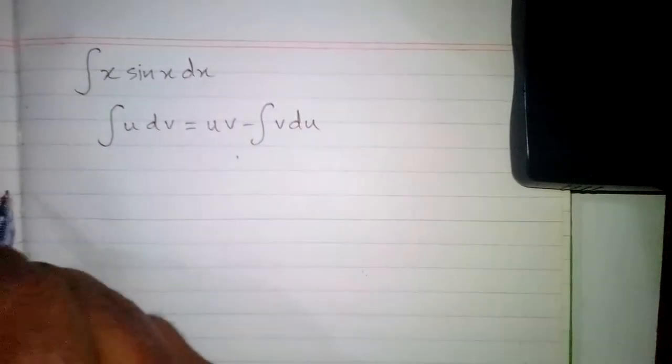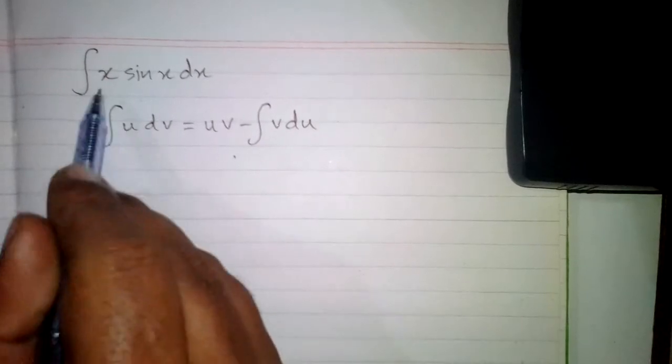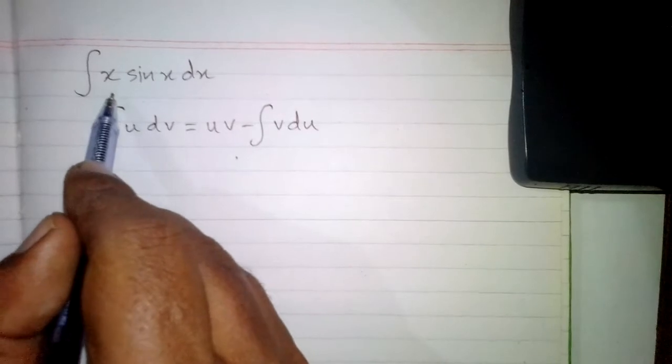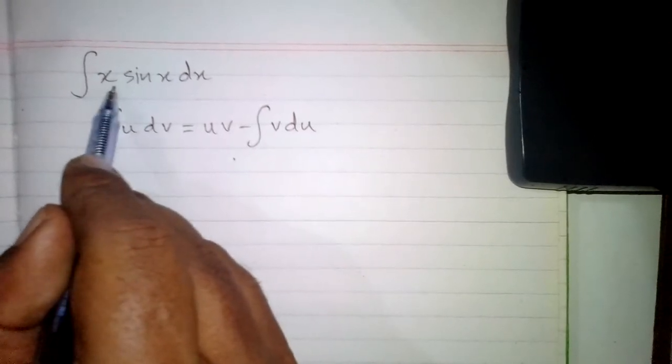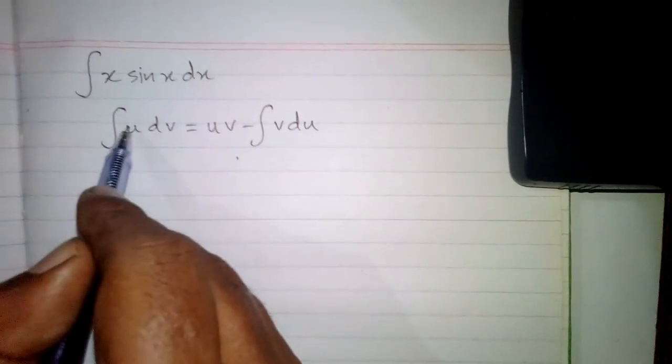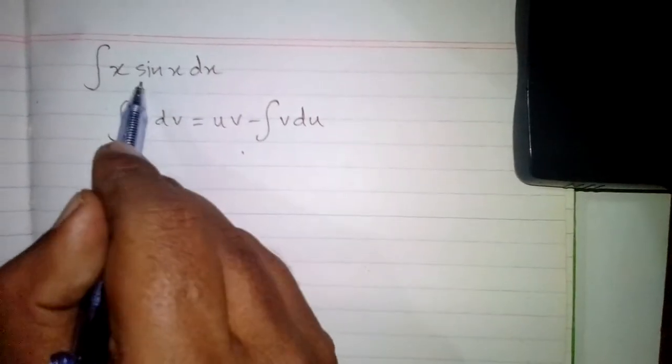Now first of all we have to decide what is u and what is dv in this integral. We can see that there are two functions: one is algebraic which is x, and the other is trigonometric which is sin x. So we will suppose u as x and dv as sin x dx.